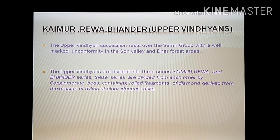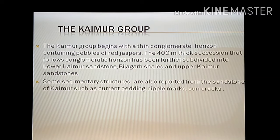The upper Vindhyan succession of Kaimur, Rewa, and Bhandir rests over the Semri Group with a well-marked unconformity in the Son Valley and Dhar forest area. These three series are divided from each other by conglomerate beds containing rolled fragments of diamond derived from the erosion of dykes of older igneous rocks. The Kaimur Group begins with a thin conglomerate horizon containing pebbles of red jasper.